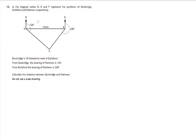So here we have a diagram showing the positions of various towns, Dunbridge, Ellsworth and Fairtown. We're given information, a couple of bearings and the distance there, 15 kilometres, and we're asked to calculate the distance between Dunbridge and Fairtown.